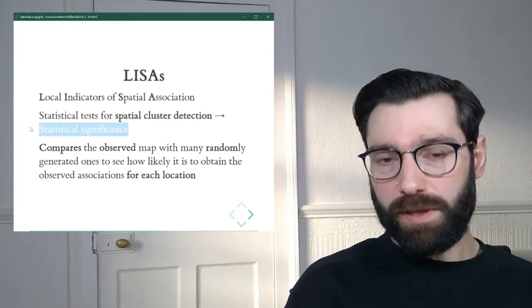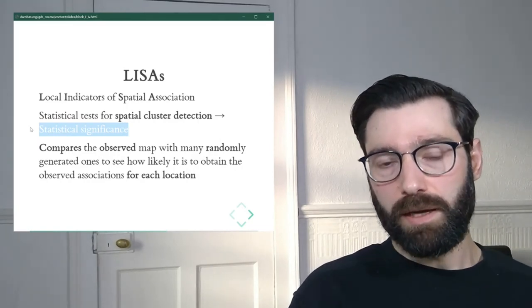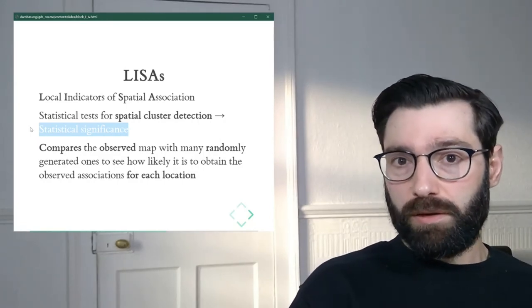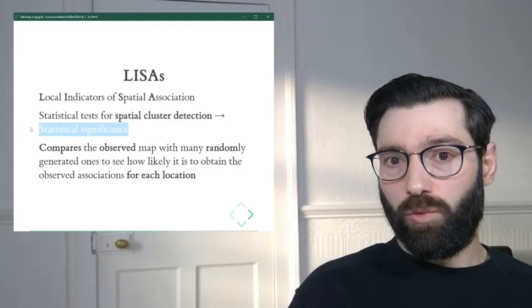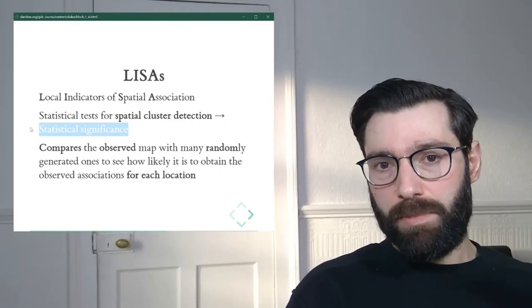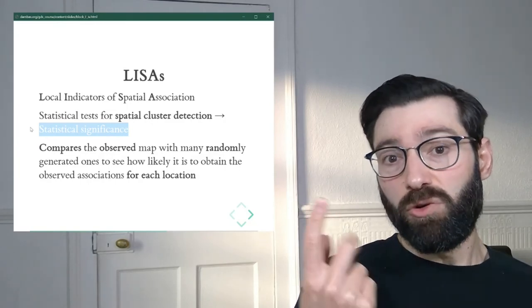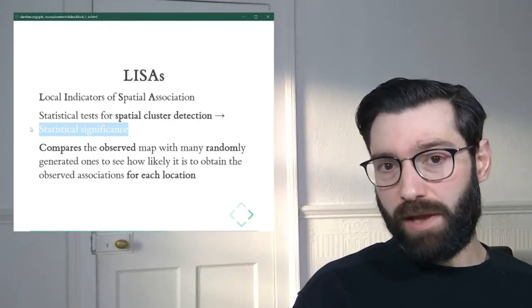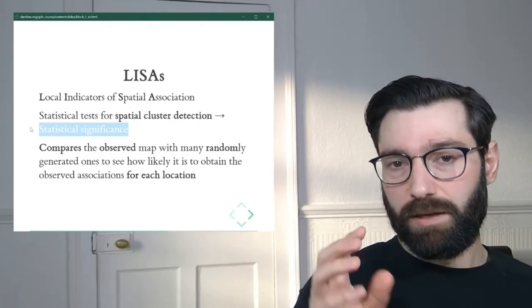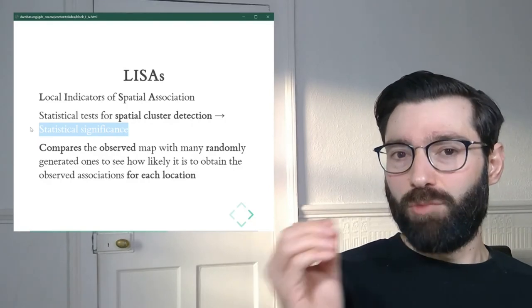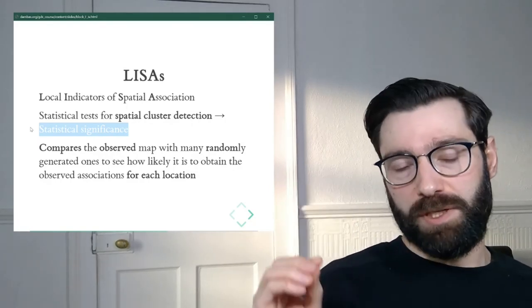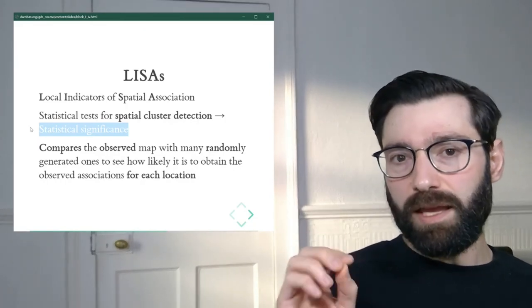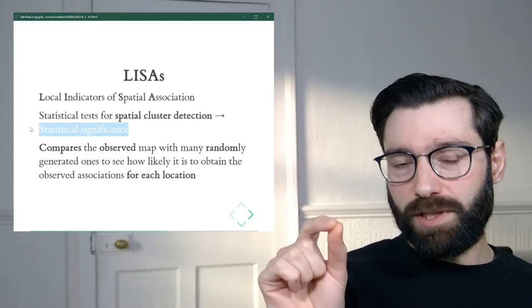Now, the important thing to note here, which I alluded a couple of slides ago, is that unlike with Moran's I, where you take an entire map and you summarize it into a single value, or maybe two, with LISAs, you take an entire map and you don't summarize it, you run a test kind of like you would do with Moran's I, but for every single observation.